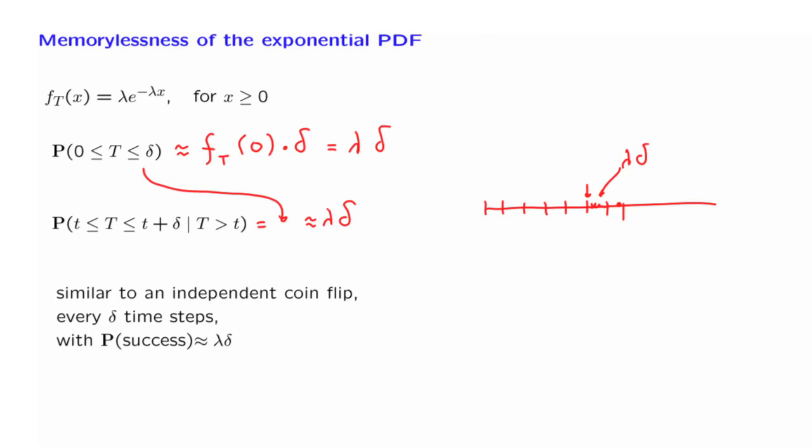In this sense, the exponential random variable is a close analog of the geometric random variable, which was the time until the first success in a discrete time setting. This analogy turns out to be the foundation behind the Poisson process that we will be studying later in this course.